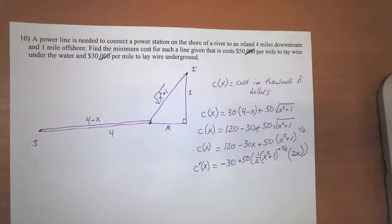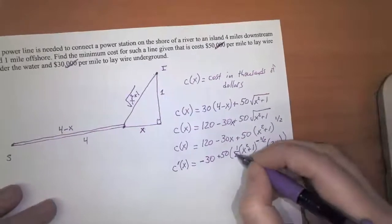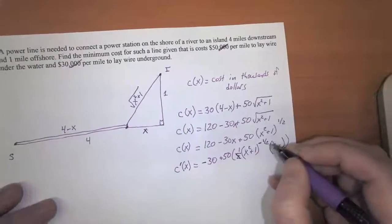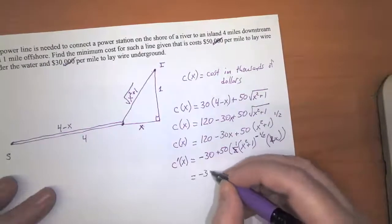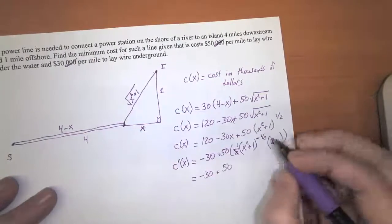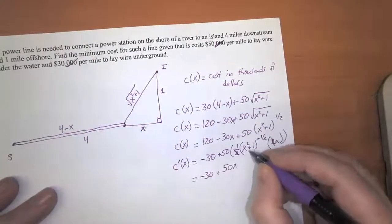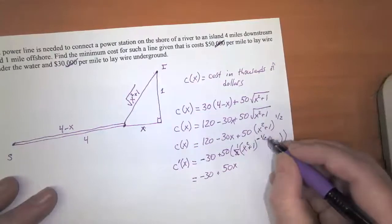Okay, so there's our derivative. Let's see if we can clean it up a little bit. I'm multiplying one half times 2x here so I can cancel out those twos at least. And so that will be negative 30 plus 50 times x times (x squared plus one) to the negative one half power.